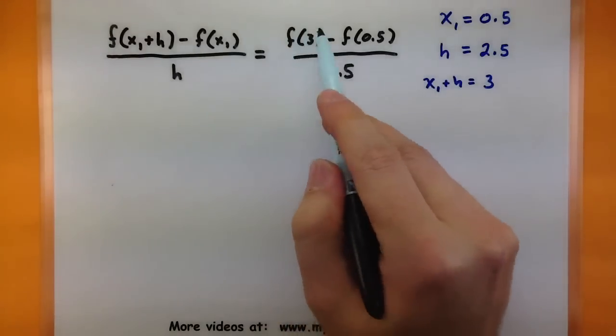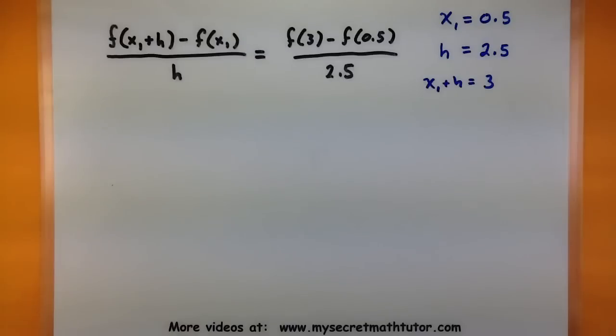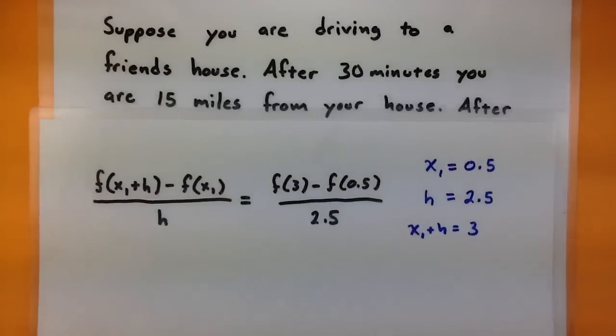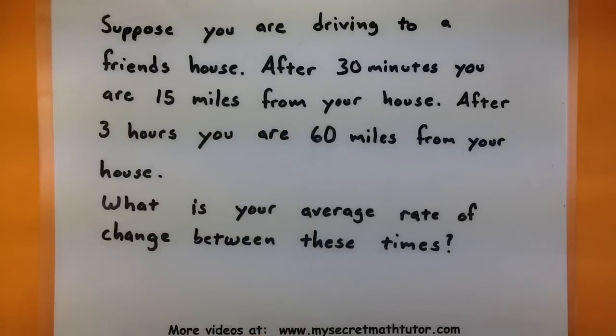First, f(3) is asking us how far away are we at 3 hours. If we check the problem, it says that at 3 hours we are 60 miles away. So I know that my f(3) is 60.